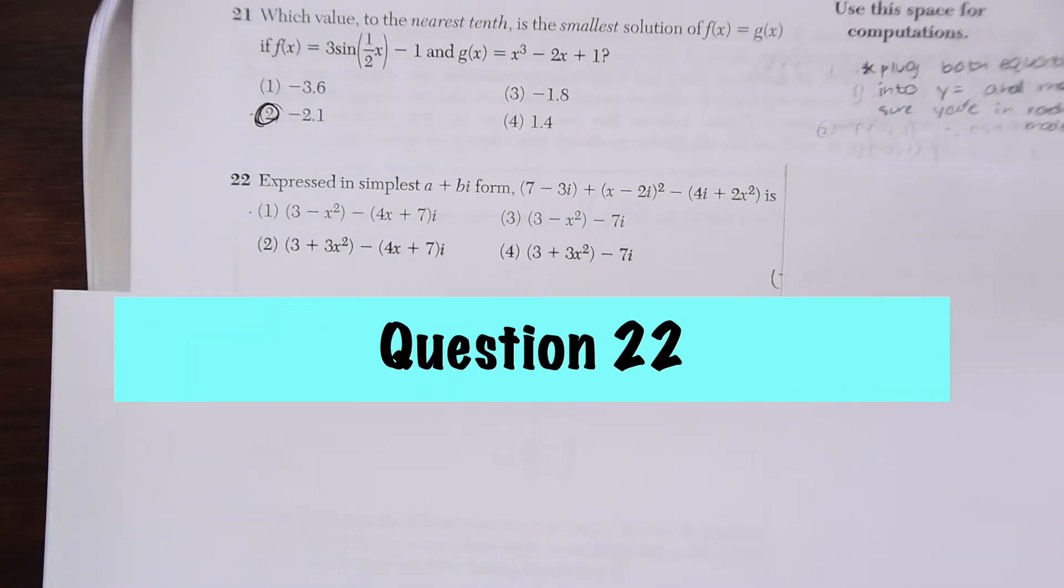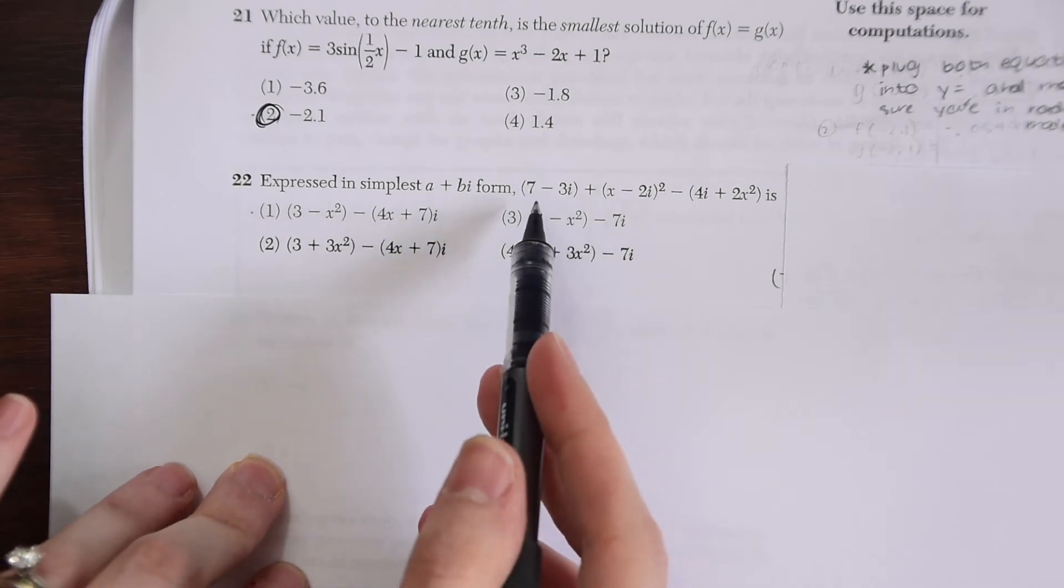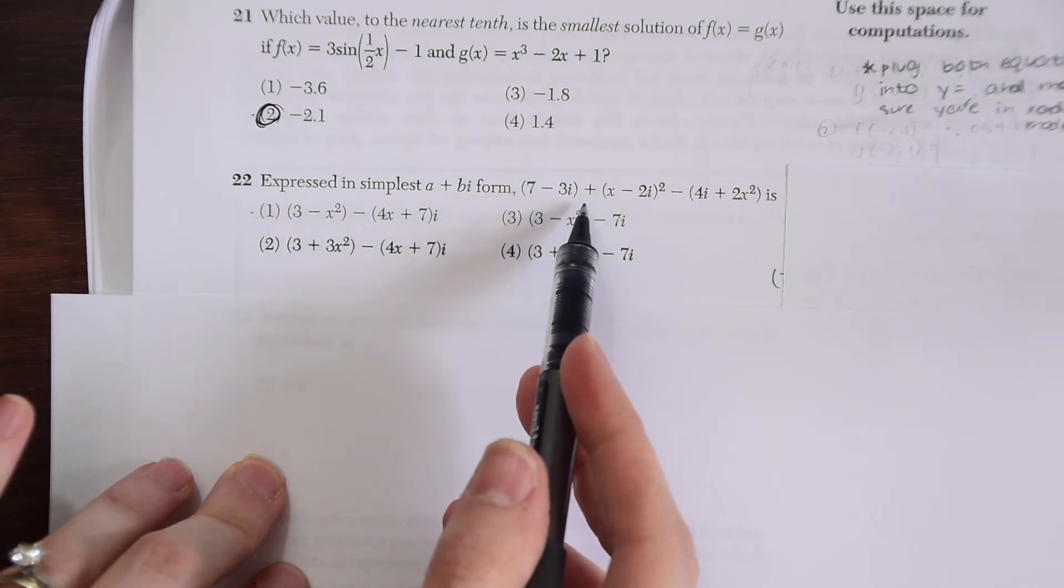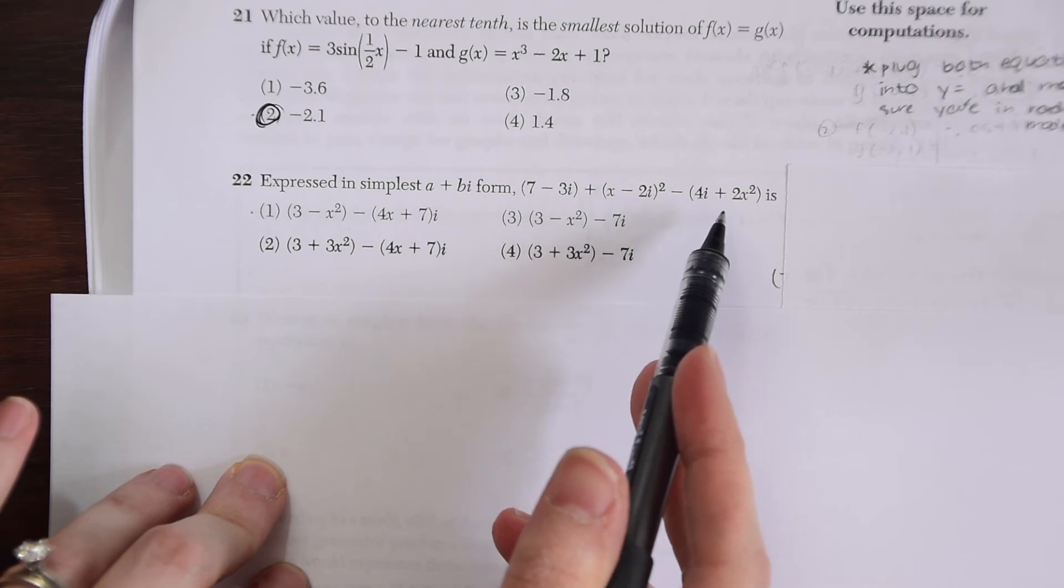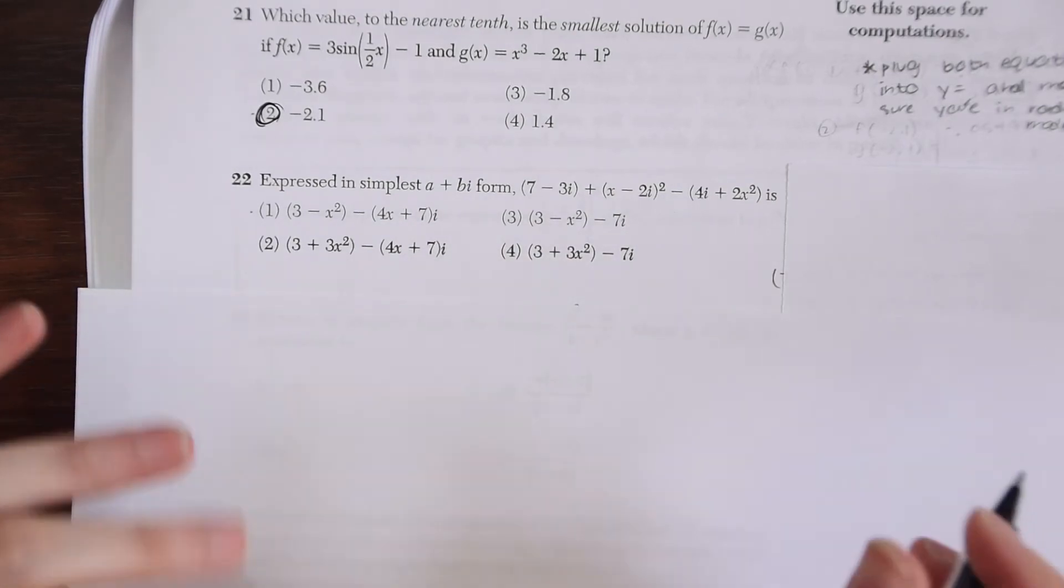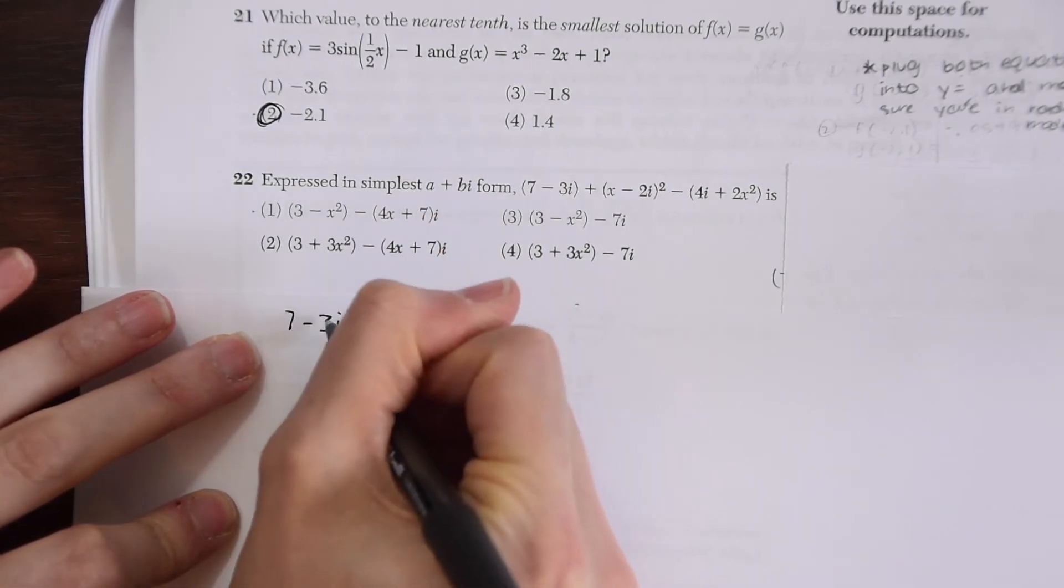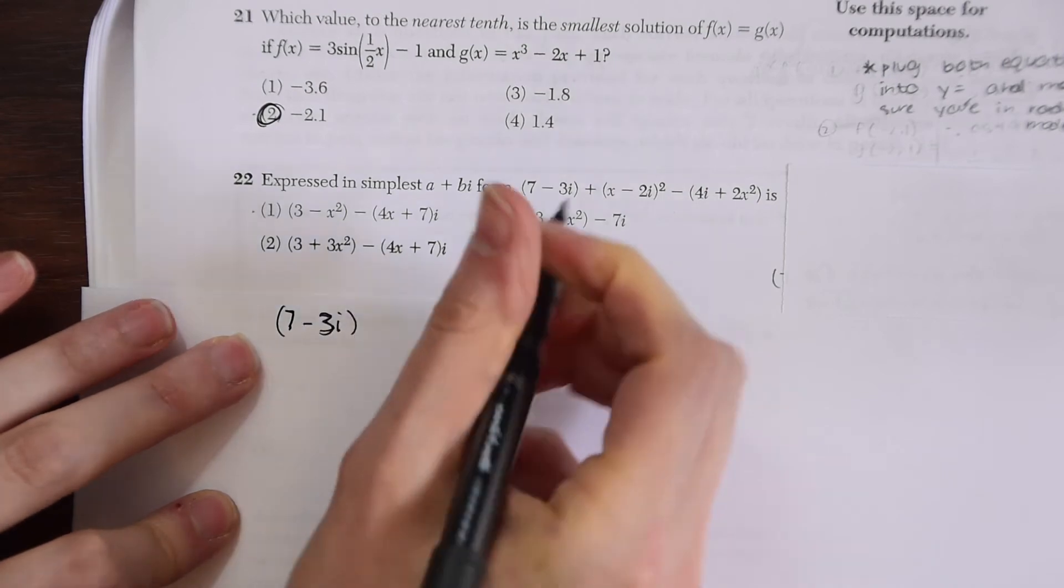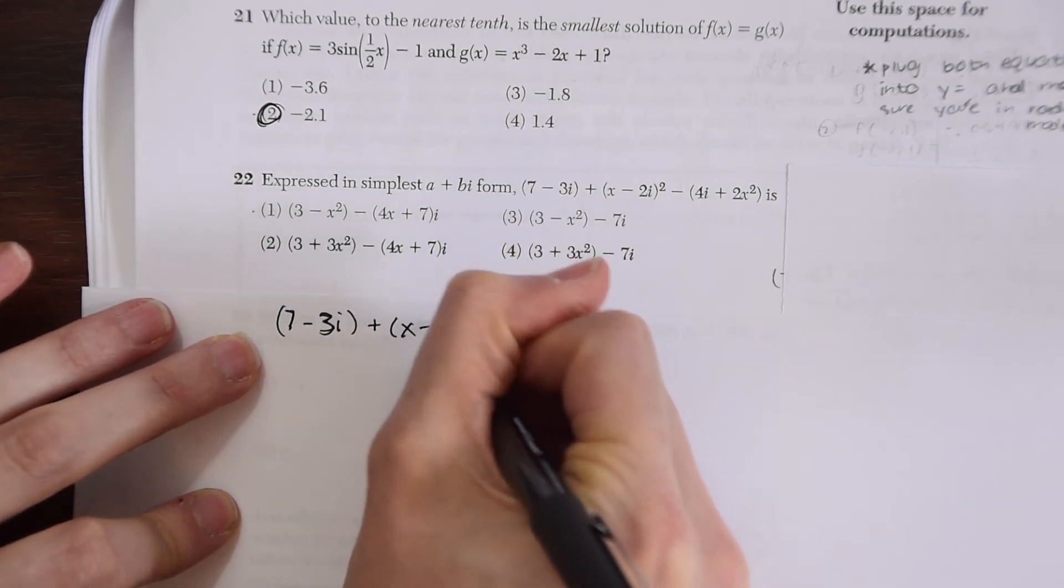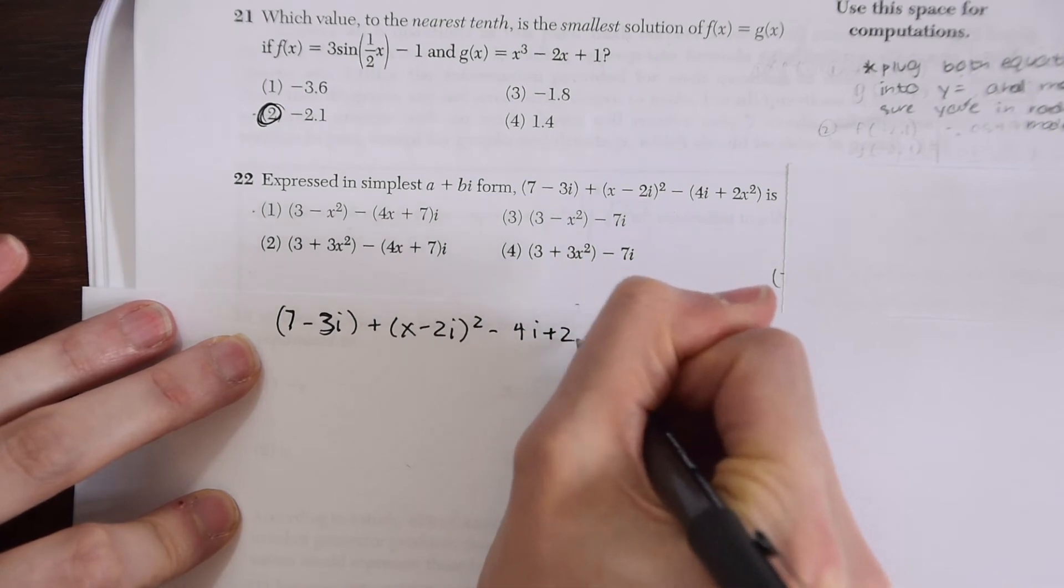On to question 22. Expressed in simplest a plus bi form, we have 7 minus 3i plus (x minus 2i) squared minus (4i plus 2x) squared. We're going to need to expand this and see what happens. Let's write it all out over here.